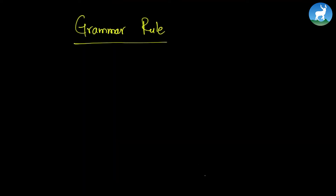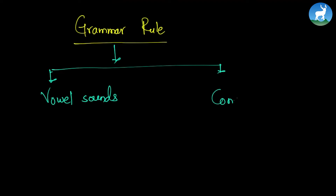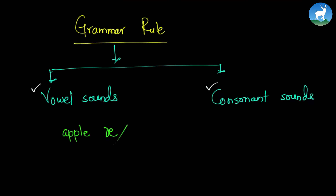The simplest grammar rule that decides the use of articles is the sound. There are two kinds of sounds: vowel sounds and consonant sounds. For example, the word apple has an 'a' sound — a vowel sound, specifically a diphthong. But the word book has a 'bo' sound, which is a consonant sound.